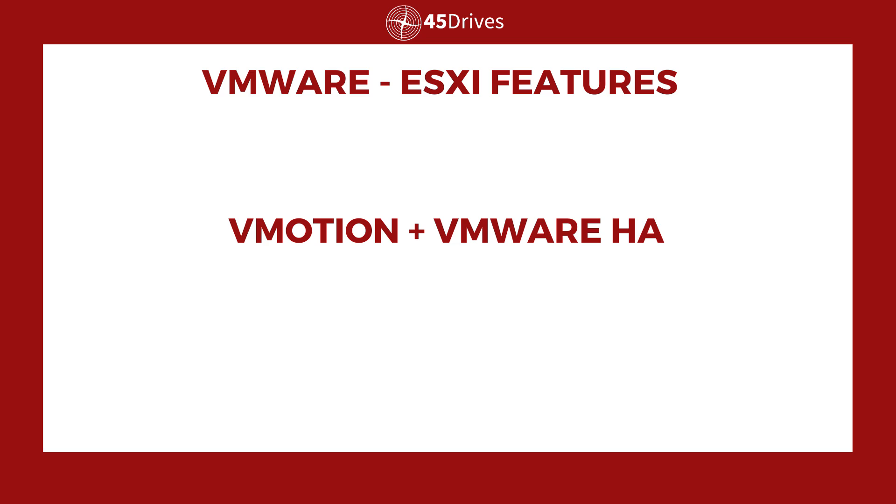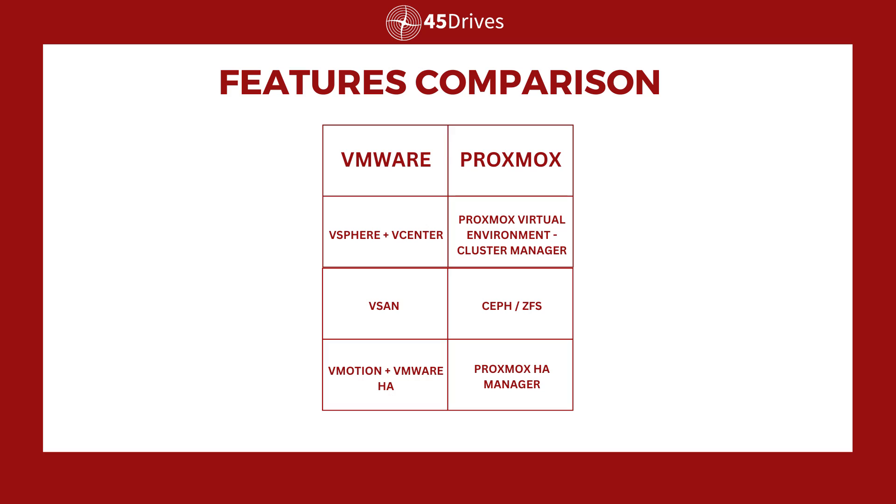Next we get to vMotion and VMware HA. These are not dedicated licenses like vSAN is — these two features are part of your vSphere license, which I know gets pretty complex. vMotion is the ability to live migrate your VMs from one host to another without any downtime. It essentially dumps the RAM to another host and migrates the disk over without any downtime for the actual machine. Proxmox's comparison for this is the Proxmox HA Manager, which allows for live migration of your VMs.